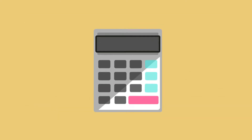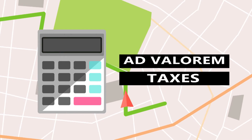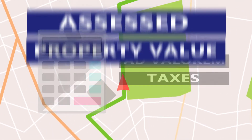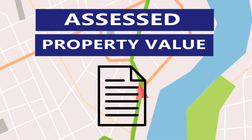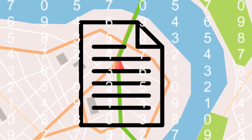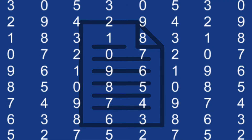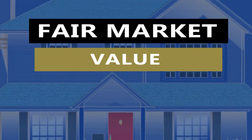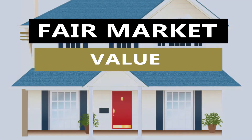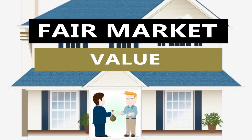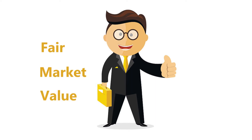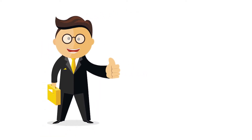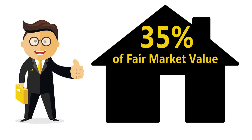The calculation for real estate taxes — ad valorem taxes — begins with the assessed property value. With standardized methods and statistical analysis, the county auditor first determines a property's fair market value. Fair market value is the amount a buyer and a seller would be willing to agree to in an arm's length transaction in the open market. The auditor uses fair market value to calculate a property's assessed value, which is 35% of the fair market value.